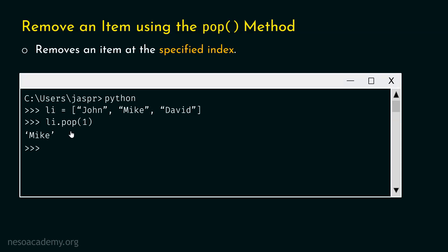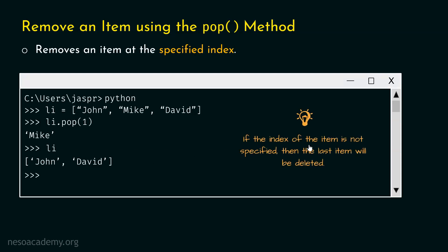This is the difference between the remove method and the pop method. Let's verify by typing li and hitting enter — we will get john and david in the list, but mike is no longer there. There is one more interesting point: if the index is not specified, then the last item will be deleted. So if we don't pass any index to the pop method, it will remove the last item of the list. In this example, david would be deleted.